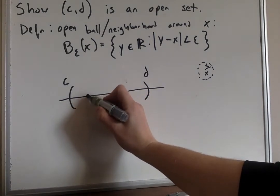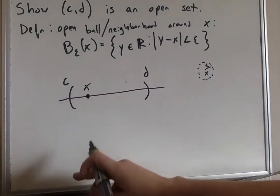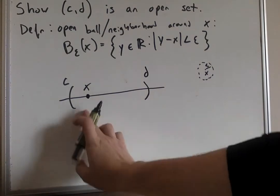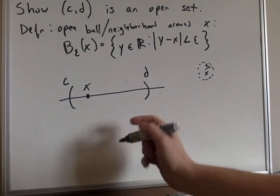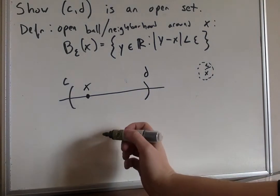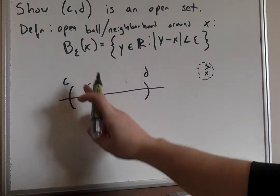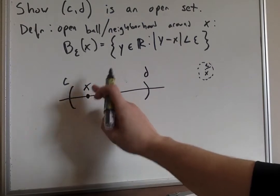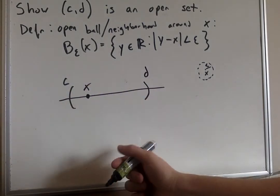So let's say we fix an x, just choose an arbitrary x. It's not really arbitrary because I'm purposely choosing it over here. But given an x within cd, we want to find an epsilon that's going to make it so the interval is going to be completely contained within it.